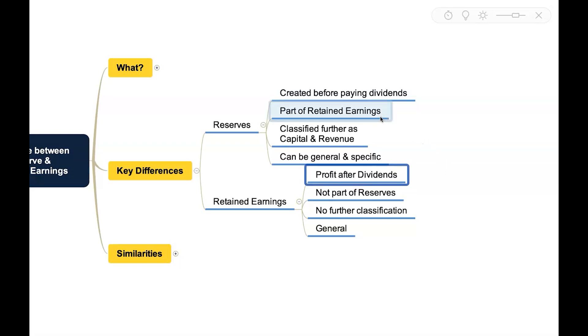And reserves we can say they are part of retained earnings, but retained earnings are not part of reserves. Reserves can be classified further as capital reserve, revenue reserve, but there is no such further classification in case of retained earnings. And reserves can be general reserve or specific reserve, whereas retained earnings are always general in nature. So these are the broad differences.